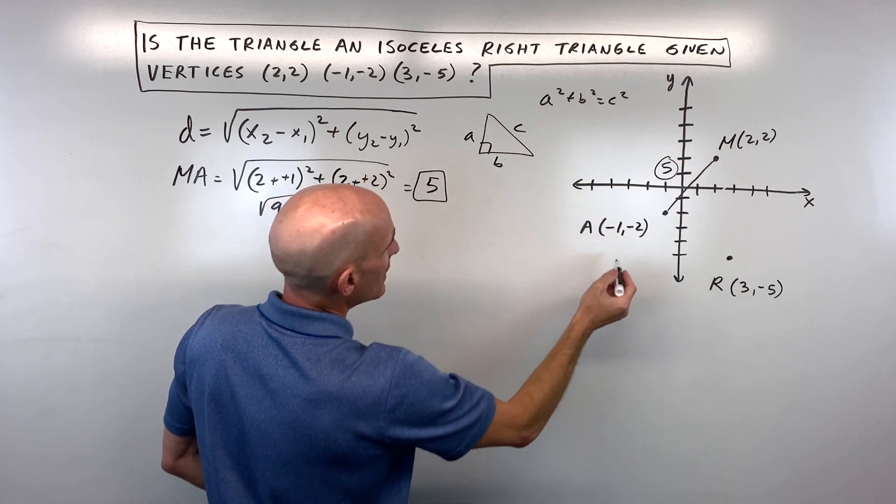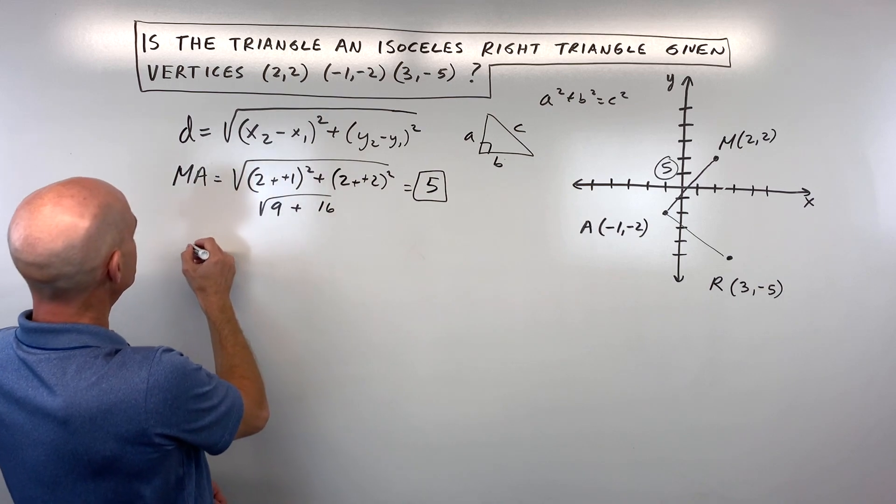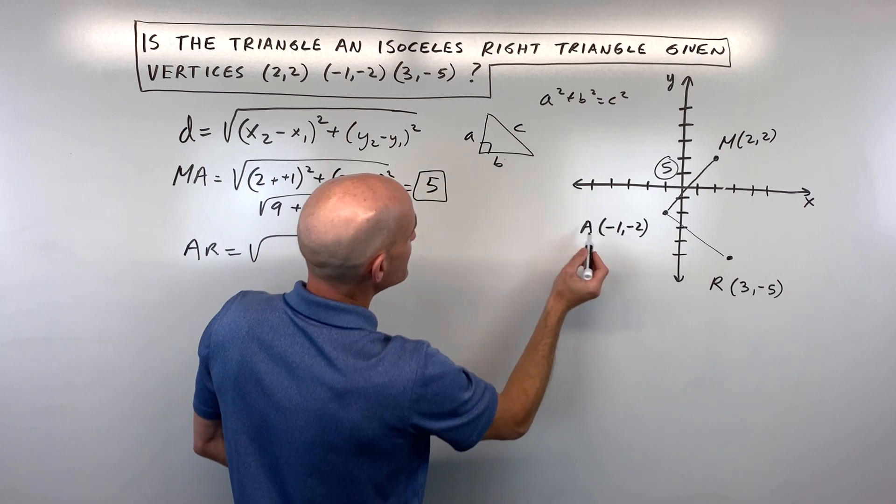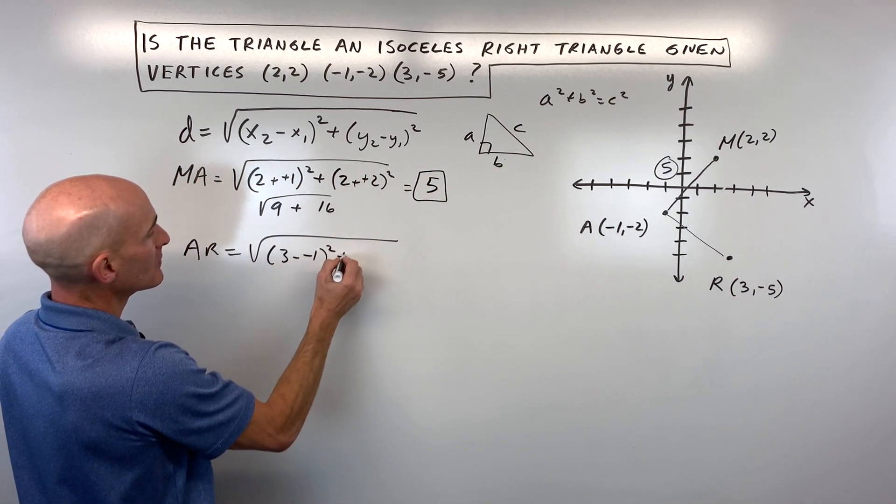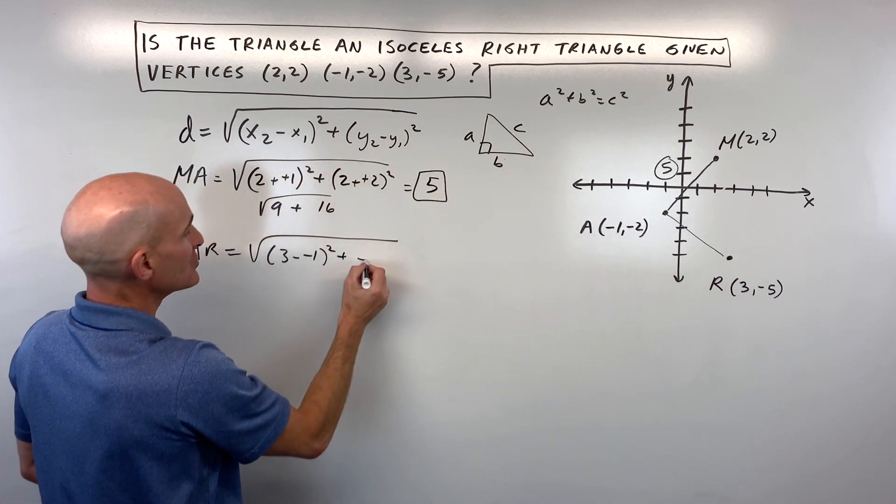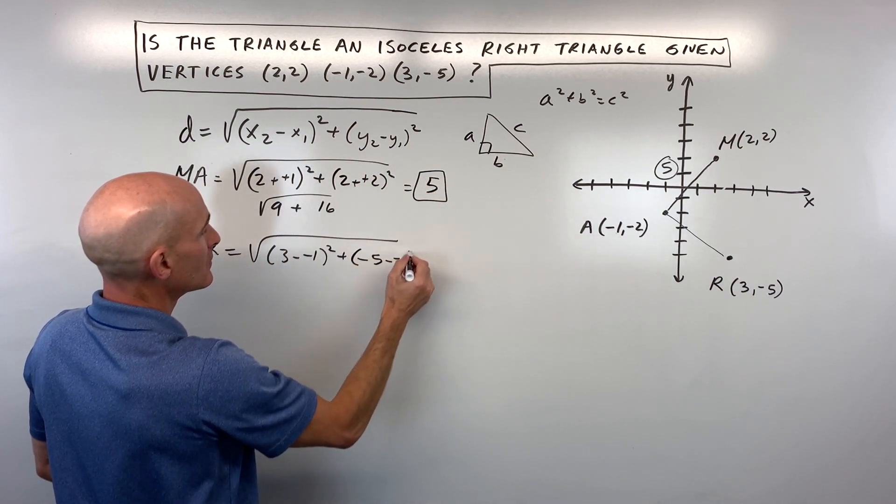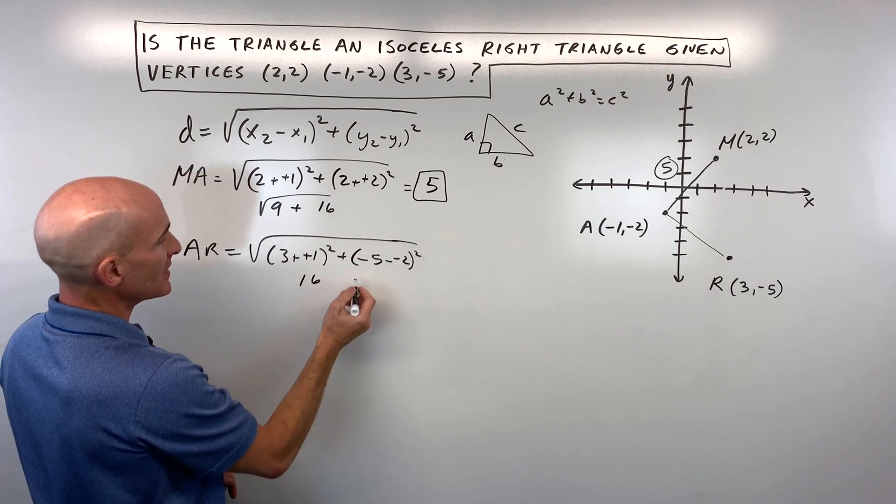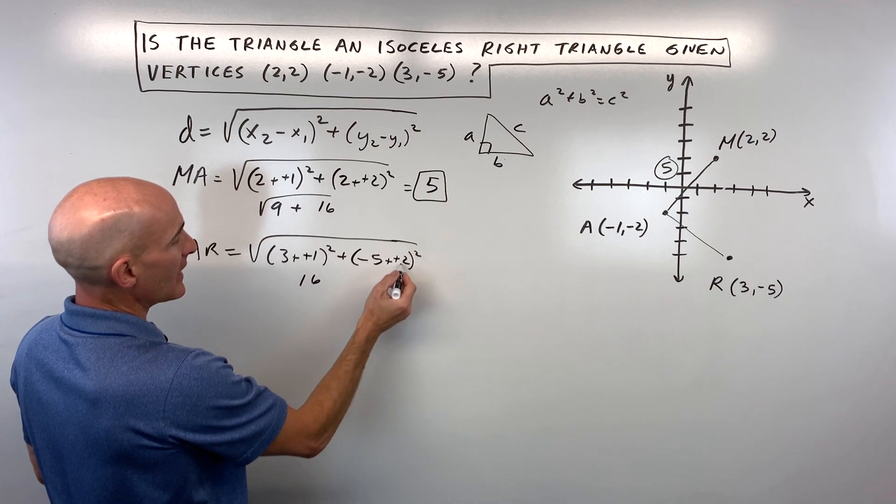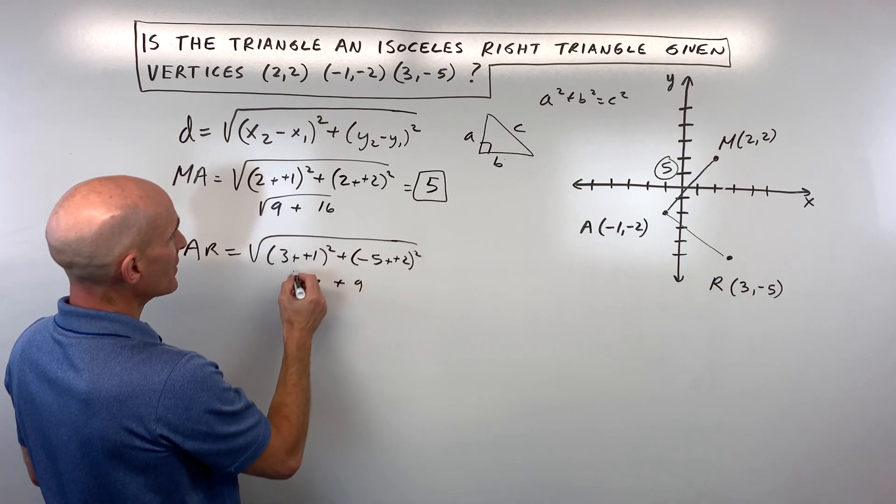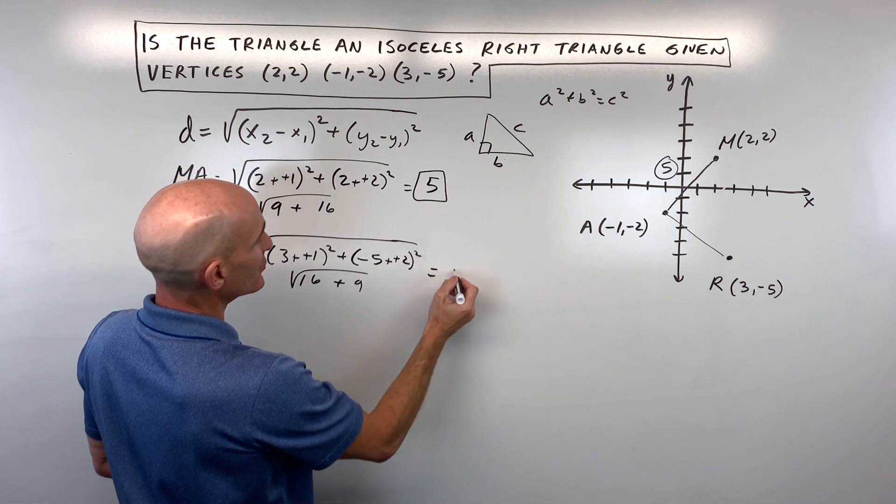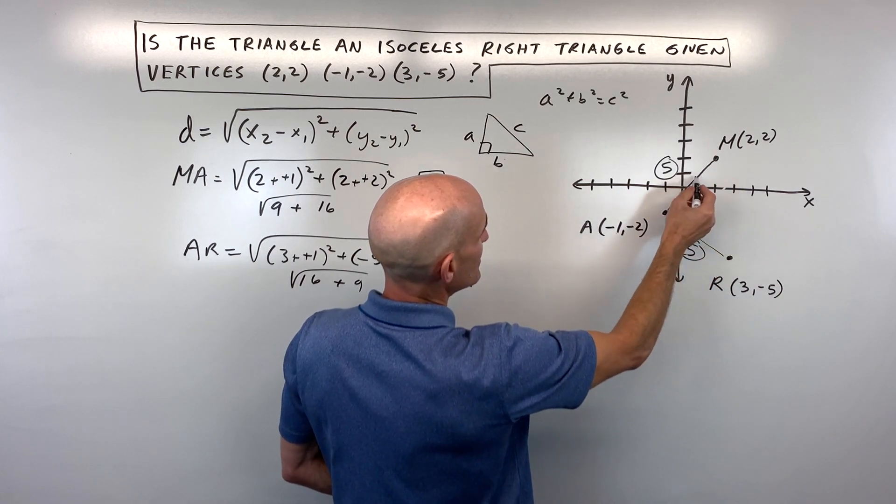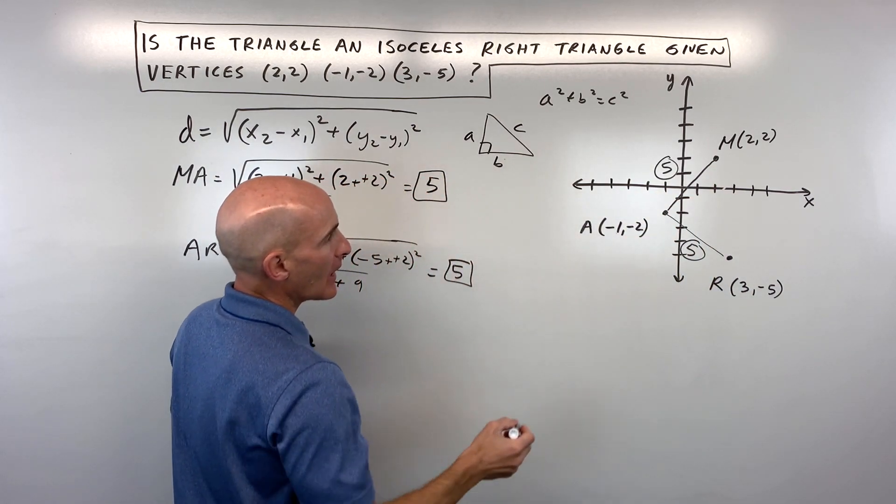Now let's do AR. Same thing, distance formula: the square root of (3 - (-1))² + (-5 - (-2))². This comes out to 4² which is 16, and (-3)² which is 9. So again we have the square root of 25, which equals 5. That tells us that this is indeed isosceles because we have these two sides congruent.